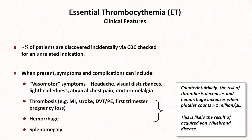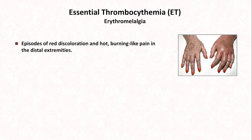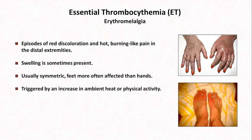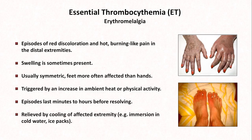ET can also cause splenomegaly. One of the vasomotor symptoms worth highlighting is erythromelalgia. Though not specific to myeloproliferative disorders and not experienced by most patients, it is one of the more classically described hallmarks of these diseases. It's characterized by episodes of red discoloration and hot, burning-like pain in the distal extremities, sometimes with swelling. It's usually symmetric, with the feet more commonly affected than the hands. Episodes are often triggered by increased ambient heat or physical activity, lasting minutes to hours. Relief comes from cooling the affected extremity, such as immersion in cold water or application of ice packs. Between attacks, affected areas may feel cold to the touch and have a purplish discoloration.